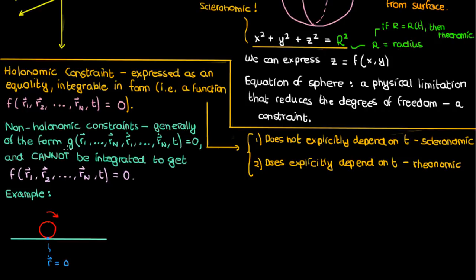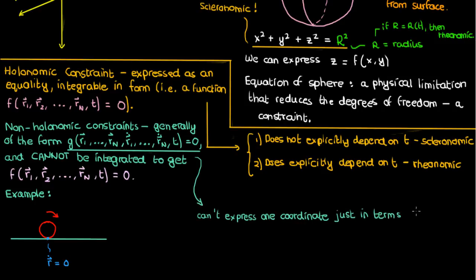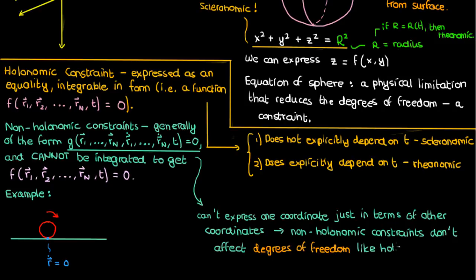It's only zero instantaneously when it's at the ground. If we're going to integrate a non-holonomic constraint like this, we would need to know the equation of the ball's motion, which is actually what we're trying to solve for in the first place. So a non-holonomic constraint is a constraint which usually involves the velocities and which cannot be integrated unless you know the equation of motion of the system. Because a non-holonomic constraint contains both velocities and positions, we can't express a single coordinate in terms of just the other coordinates before solving for the equations of motion. Because of this, non-holonomic constraints don't affect our degrees of freedom the same way that holonomic constraints do.